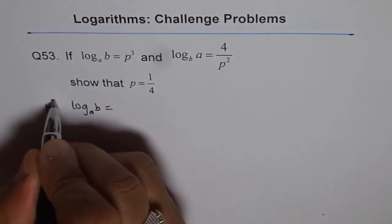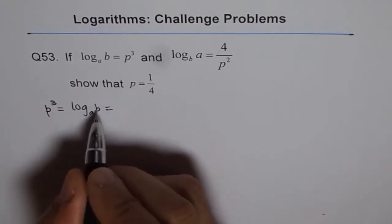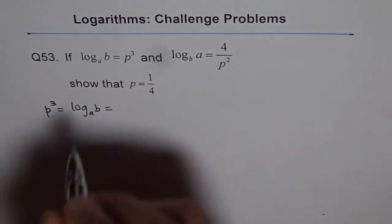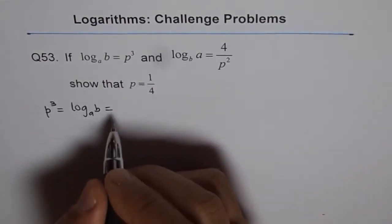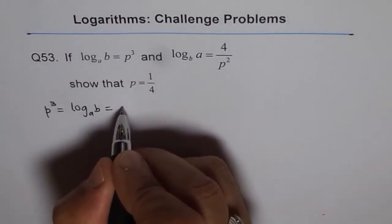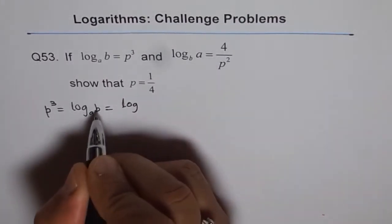Log A of B equals something which is P cubed. If P cubed equals log A of B, then we'll write this in terms of B over A and see what we get. So we can write this using change of base formula. We'll apply change of base formula and change our base to B.